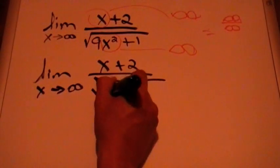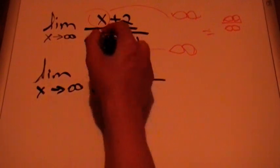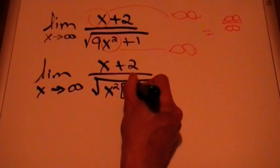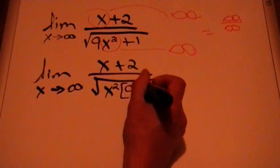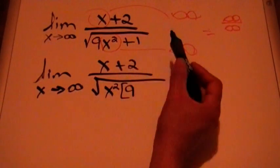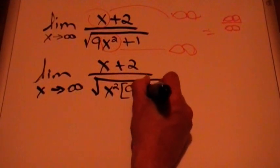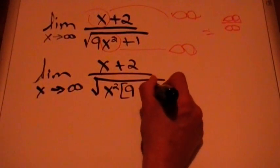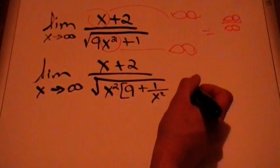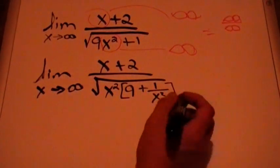By taking x² out of the square root, what remains inside is just 9. And then it's like saying 1 plus — we want to put 1 over x² inside — so that's how I factor out x².